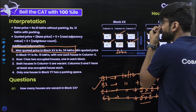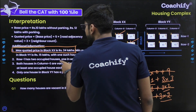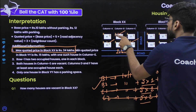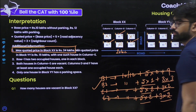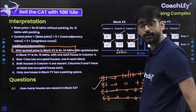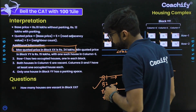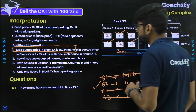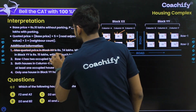From this information, we can answer question 1: how many houses are vacant in block XX? A1, C1, and B2 are vacant — exactly 3 houses are vacant in block XX. The correct answer is 3.